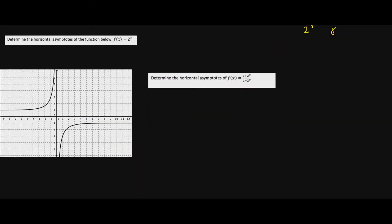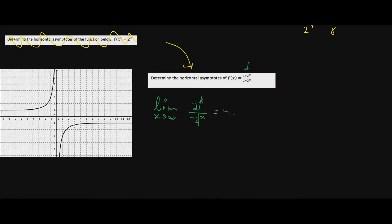This will be really important for horizontal asymptotes with exponential functions. Let's determine the horizontal asymptotes of f(x). Naturally we do the limit as x approaches infinity and ignore what's insignificant — the one — so we get two to the x divided by negative two to the x. These are the same, so we get negative one. The limit as x approaches infinity of f(x) is negative one.